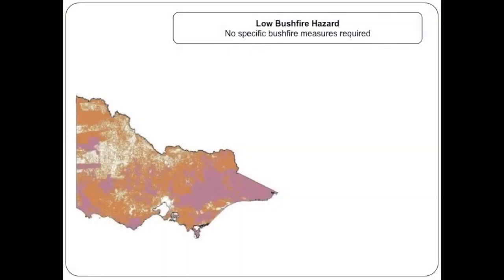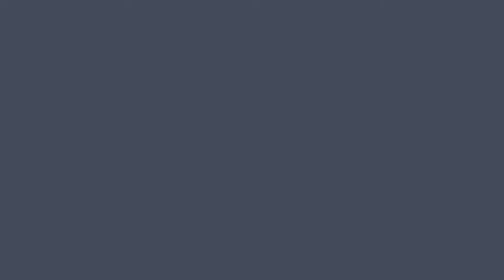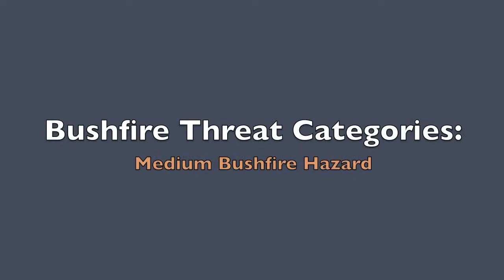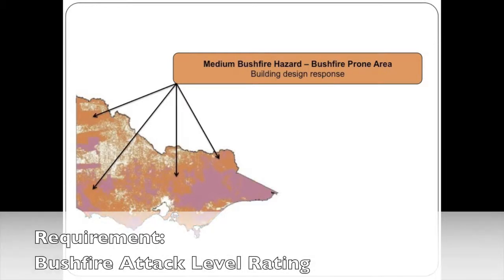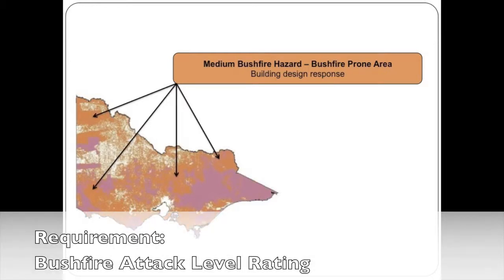In a low bushfire threat area, there are no specific bushfire protection measures required. Buildings in the next category of medium threat bushfire prone area require protection from ember attack. This is covered by a bushfire attack level rating known as a BAL.